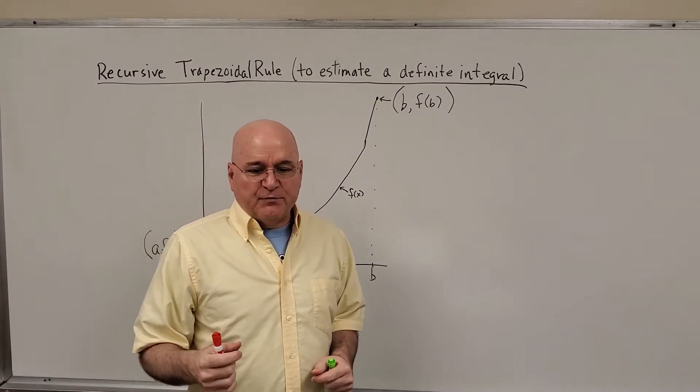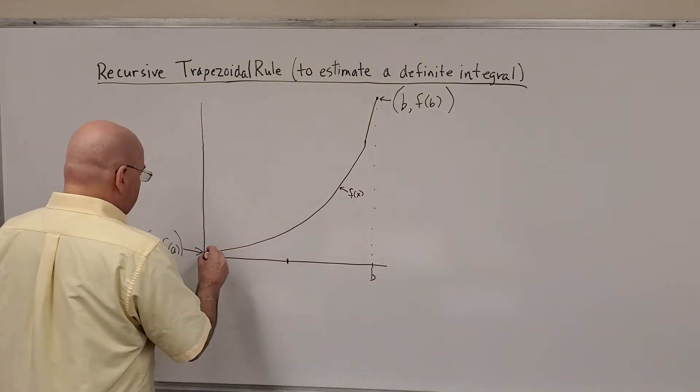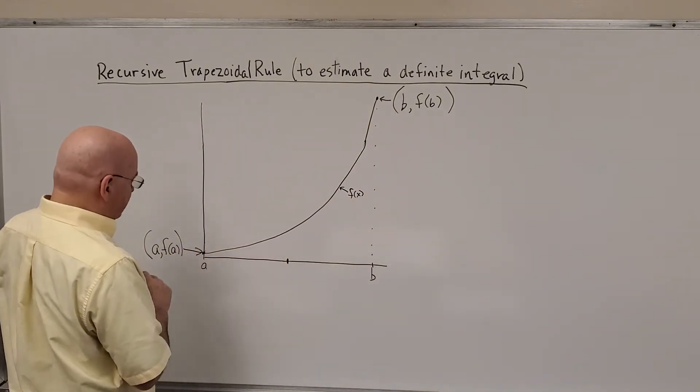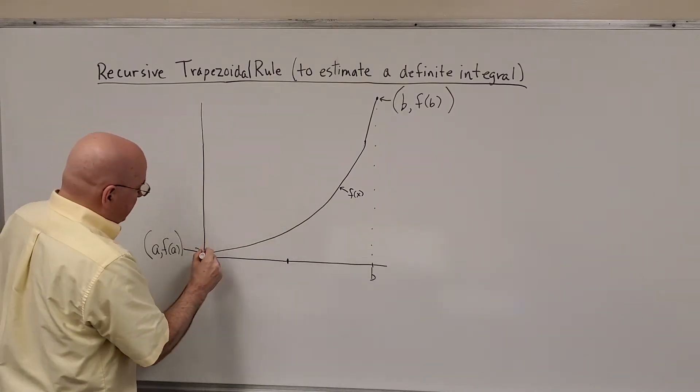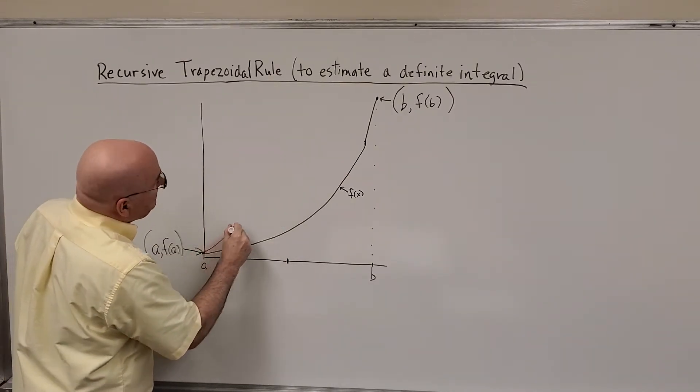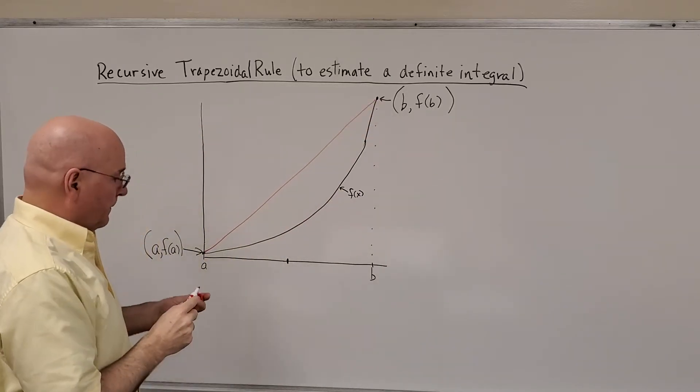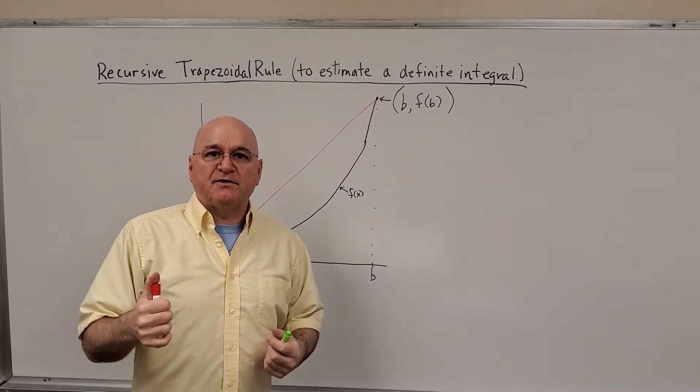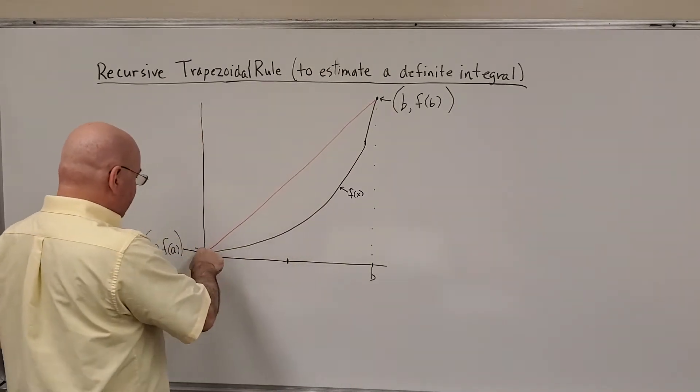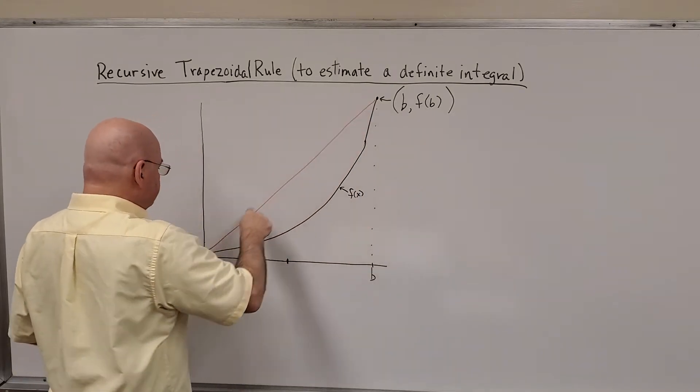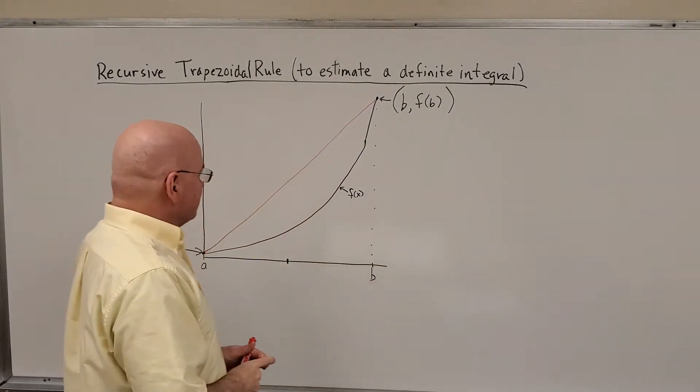The trapezoidal rule, if we do the absolutely simplest case, would be to make one trapezoid, connect a, f of a, with b, f of b, like that. And we compute the area of the trapezoid, the area underneath the straight red line, this trapezoid right here. And that's our estimate, which you can see greatly overestimates it.